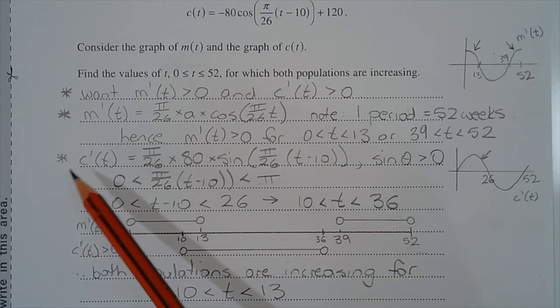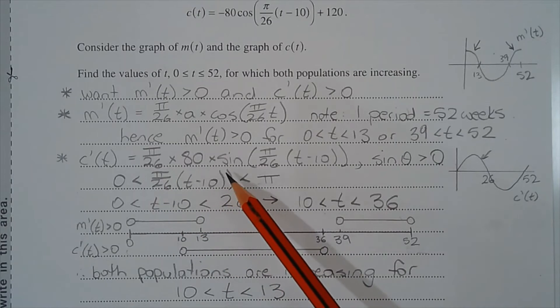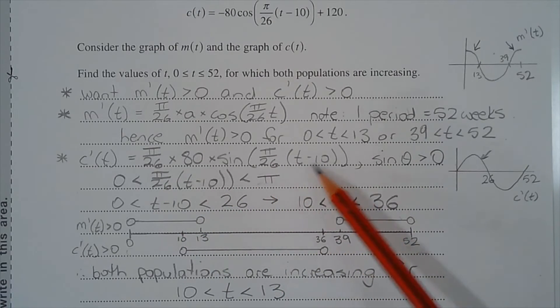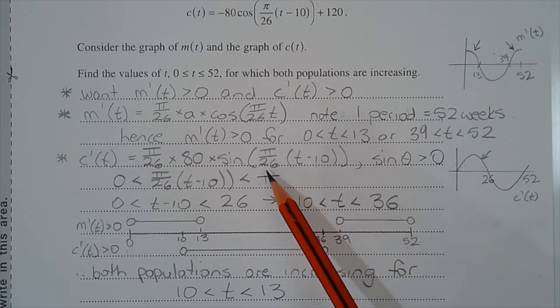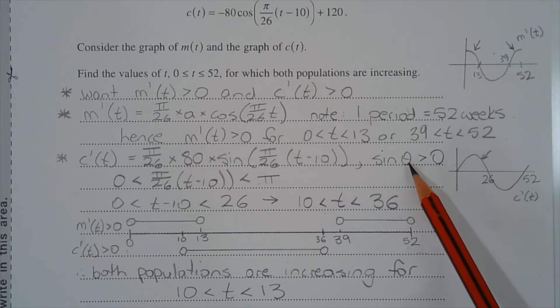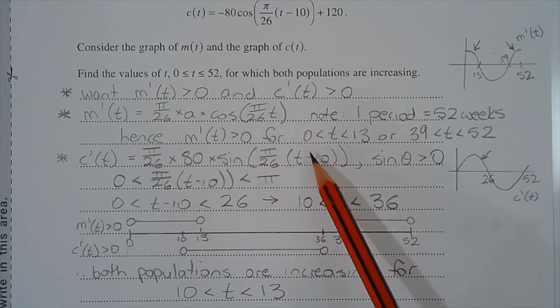Let's consider c'(t) or dc/dt. And that equals (pi/26) multiplied by 80 multiplied by sine of (pi/26)(t - 10). This is a sine curve that's been dilated vertically and horizontally and also translated horizontally. Now if we replace (pi/26)(t - 10) with theta, we want values of theta such that sine of theta is greater than 0. And we know that sine of theta is greater than 0 for values of theta between 0 and pi.